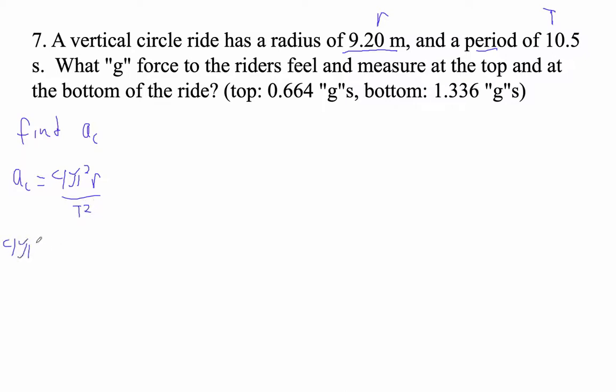So it's going to be 4π² times our radius 9.2. This is like a Ferris wheel, only it's going pretty fast. So 4π²r over t squared, which would be 10.5. Don't forget to square the t.